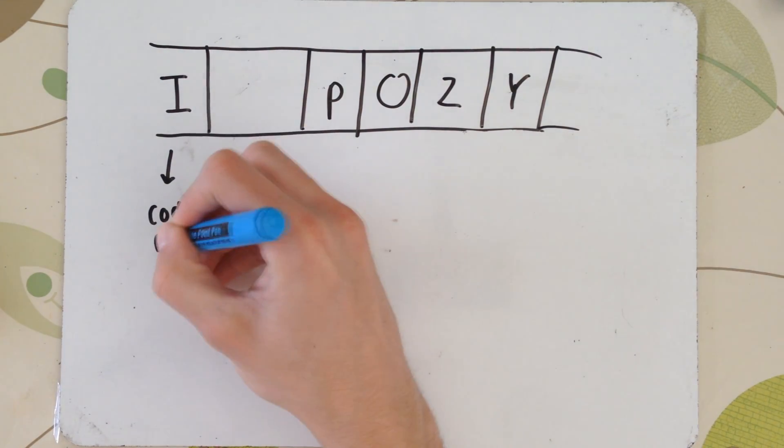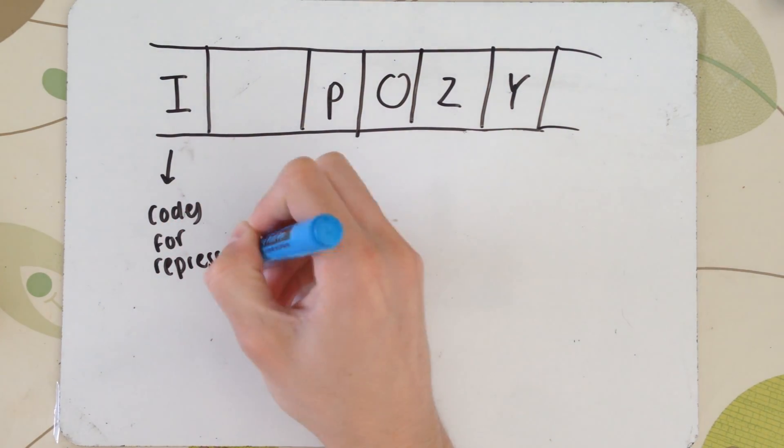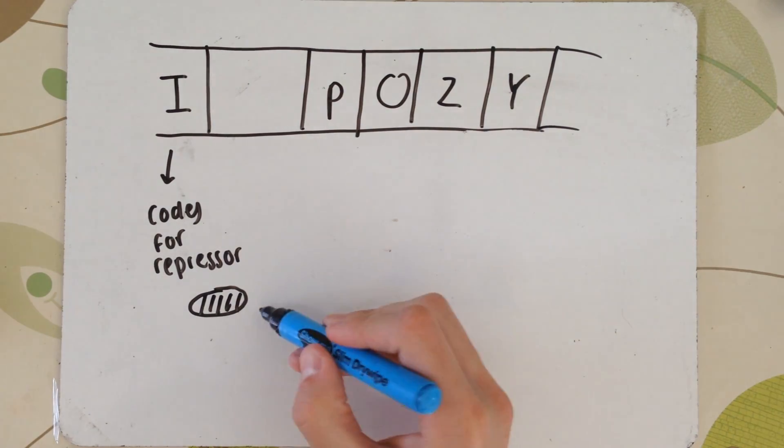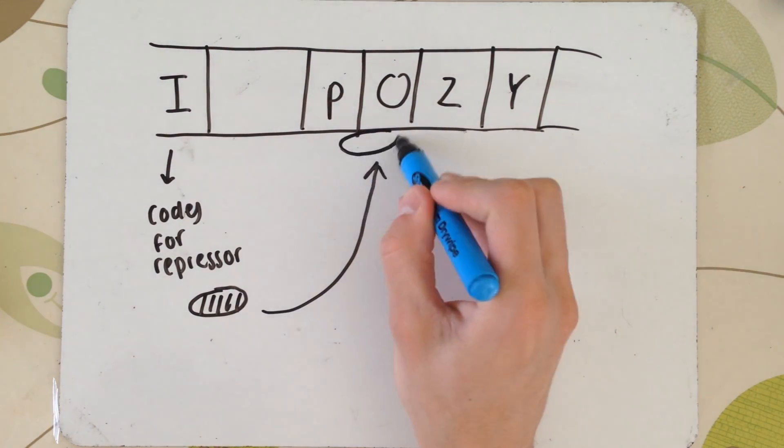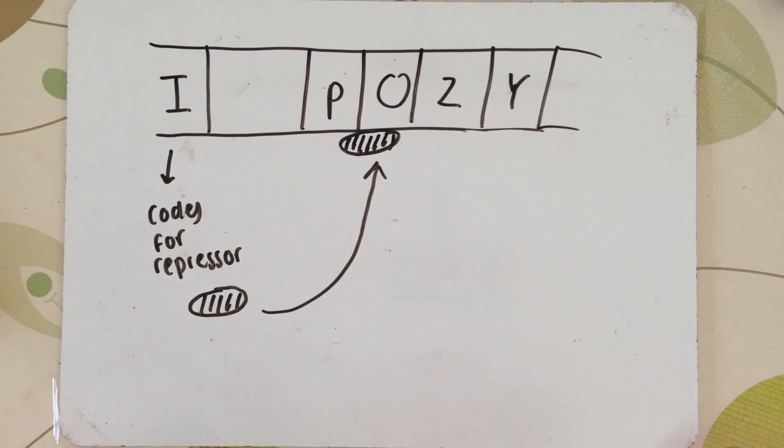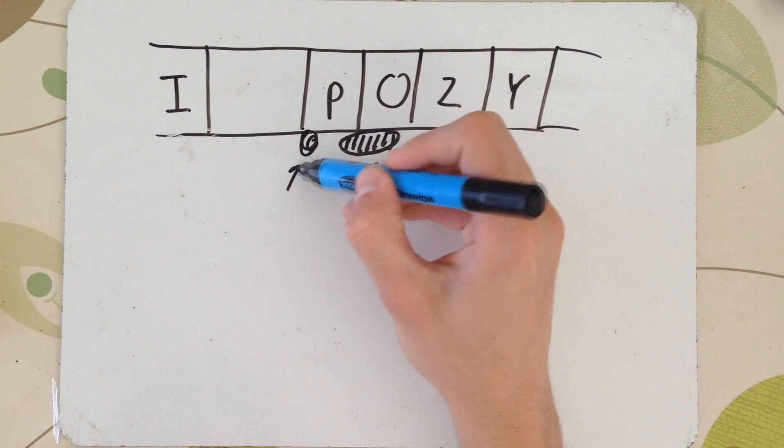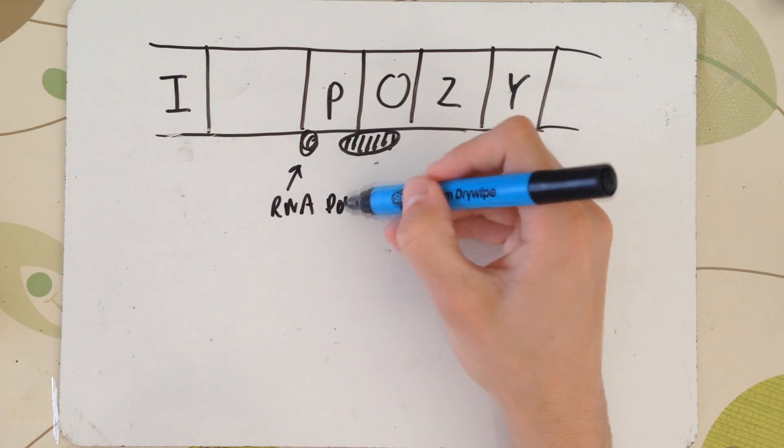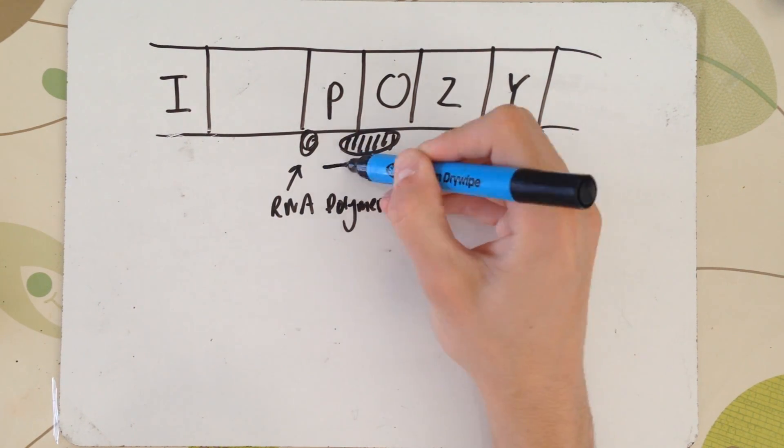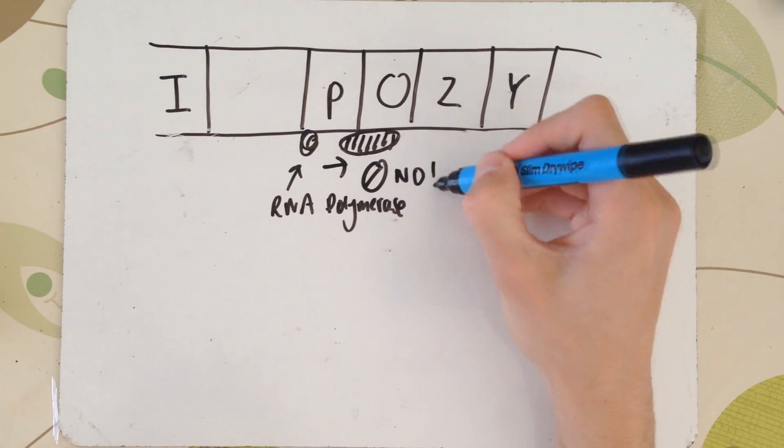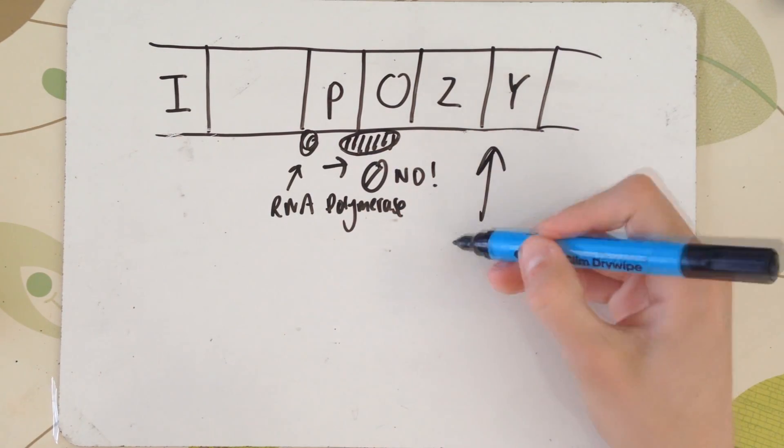So, like I said earlier, I, our regulatory gene, codes for our repressor protein and the repressor protein essentially sits itself on the operator region. However, part of it, a very small part, covers the promoter region and because this is covering the P region, this is not allowing RNA polymerase to bind. Therefore, transcription of the Z and Y genes can't occur as it can't get past this repressor protein.